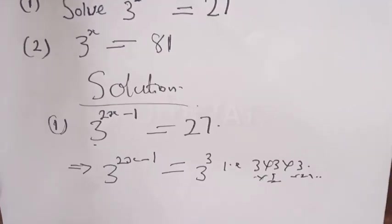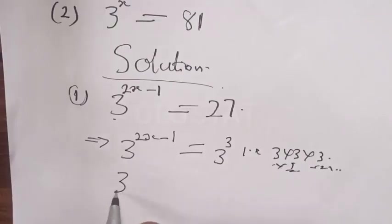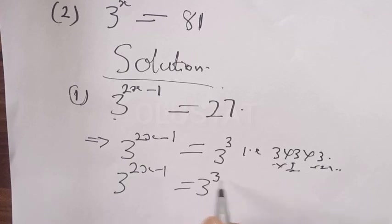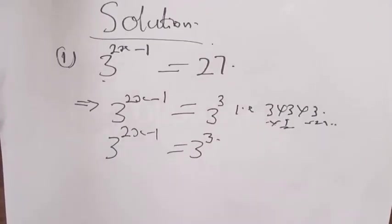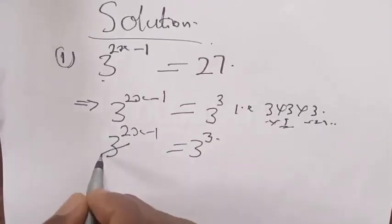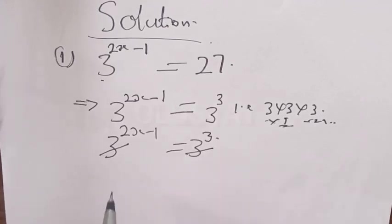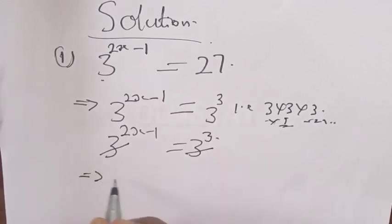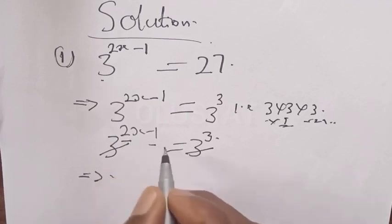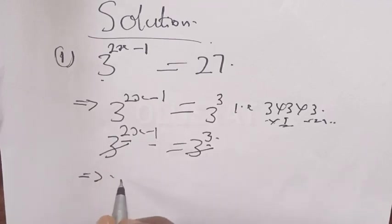Therefore, we have 3 raised to power 2x minus 1 is equal to 3 raised to power 3. The base here is 3, so we cancel the bases on both sides. This leaves us with 2x minus 1 is equal to 3.